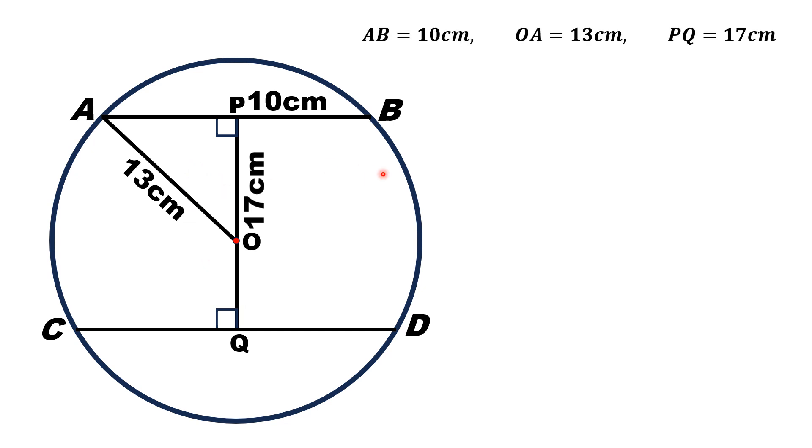Let me mention the different lengths over here. AB chord is 10 cm, radial length OA is 13 cm, and the vertical length PQ is 17 cm.